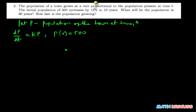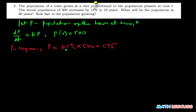That implies that in 10 years, the population p equals 115% times 500, which gives us 575. This depicts that when time equals 10, the population is 575. These two are initial conditions that we are going to use to solve the problem.